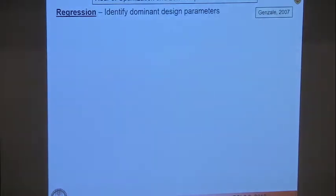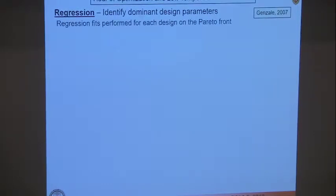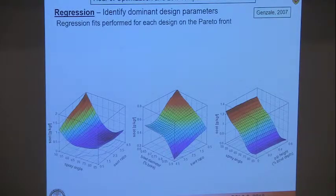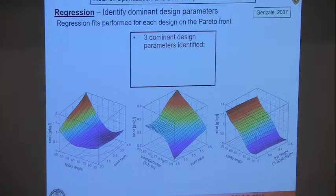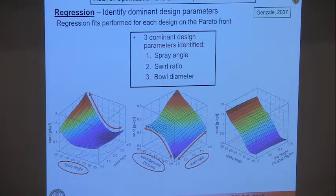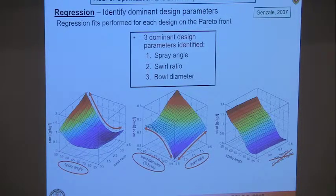For the designs on the Pareto front, we look at soot produced as a function of spray angle, swirl ratio, bowl diameter, and pip height. Three dominant design parameters were identified: the spray angle, the swirl ratio, and the bowl diameter. Pip height wasn't really important because for any pip height we got pretty much uniform results. That shows up in the regression simulation.